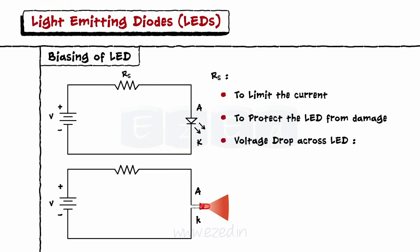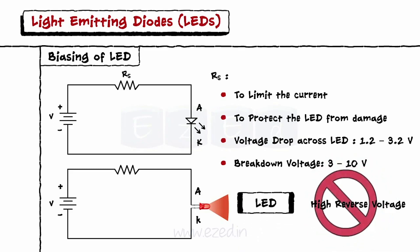The voltage drop across conducting LED is in the range of 1.2V to 3.2V depending on the material used. LEDs have extremely low reverse breakdown voltage of the order of 3 to 10V, so they should not be subjected to high reverse voltages.